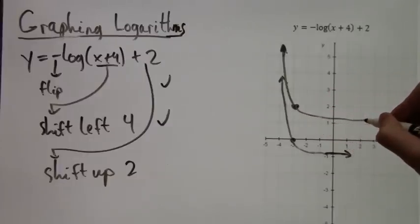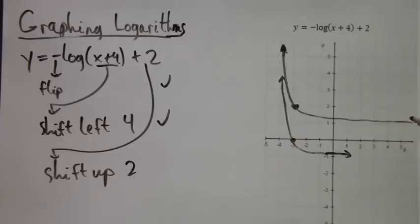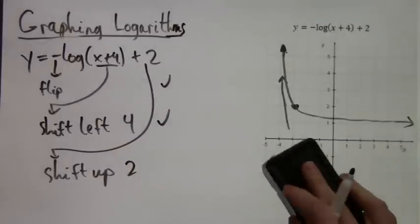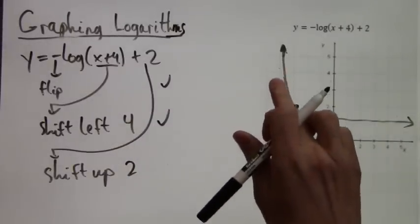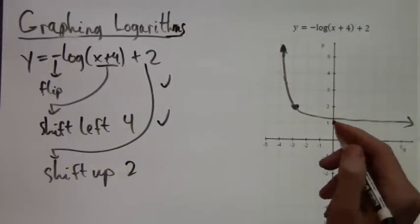We go up really high over there on the left and decrease ever so slowly on the right, and that's about what it'll look like. There we have our graph. Thank you for watching this video lesson, and I hope it helped.